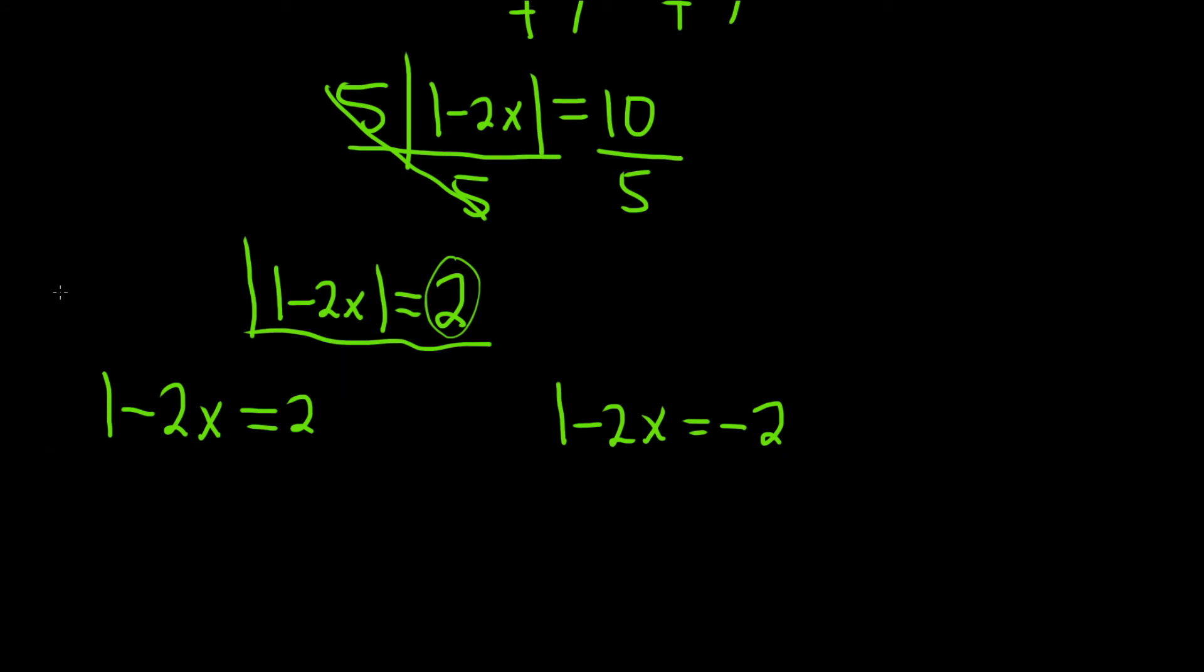And then you solve each one individually. So here we'll subtract the 1. These cancel. So we have minus 2x equals 2 minus 1 is 1. And then we divide by negative 2. So we end up with x equals negative 1 over 2. So that is one of the answers.